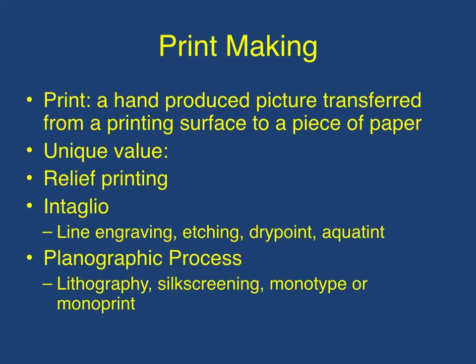The next medium is printmaking. A print is a hand-produced image that's transferred from a printing surface to a piece of paper or some other medium. Usually they are numbered with an edition number, because in most printmaking formats you can create multiple prints. If an artist wants to add unique value to their print, they'll number them and give them edition numbers, and then afterwards they will actually destroy the printing block or original print so no other prints can be made. There are three main types of printing: relief printing, intaglio, and the planographic process.